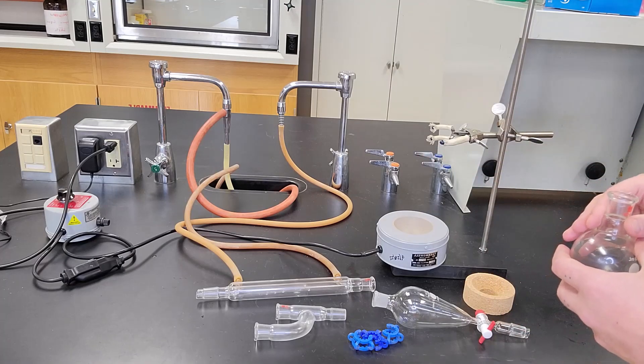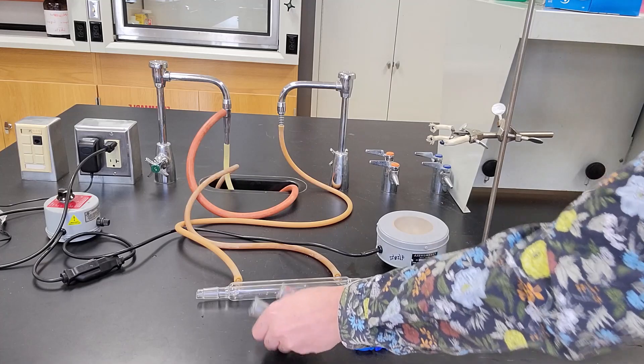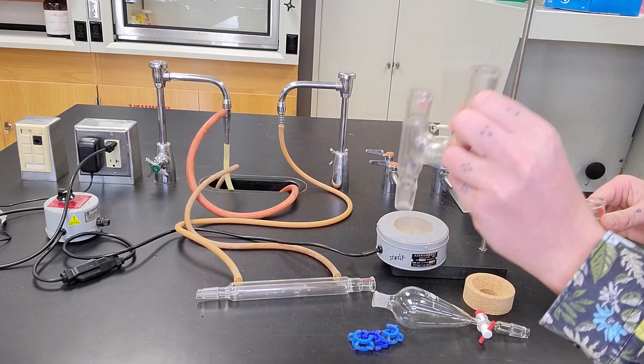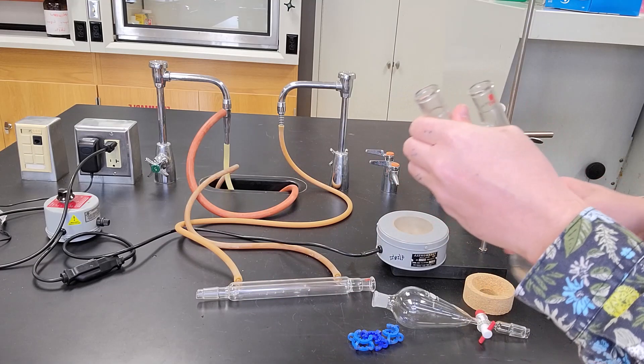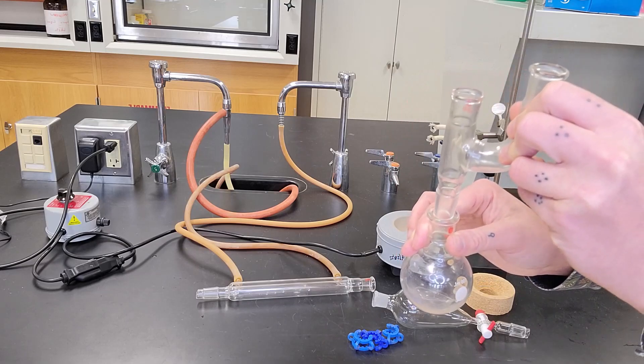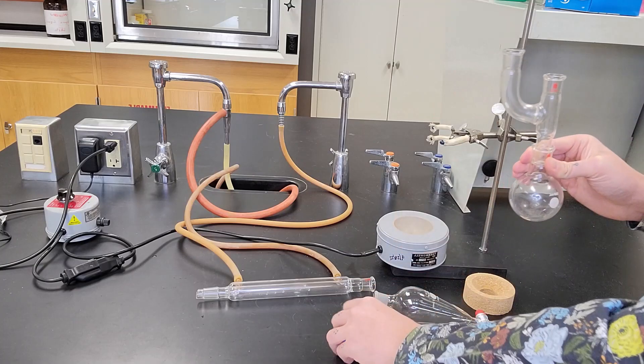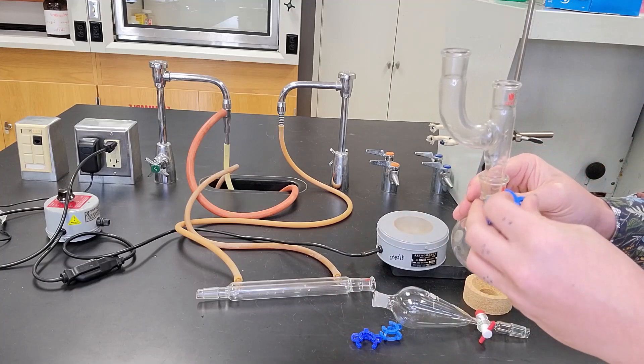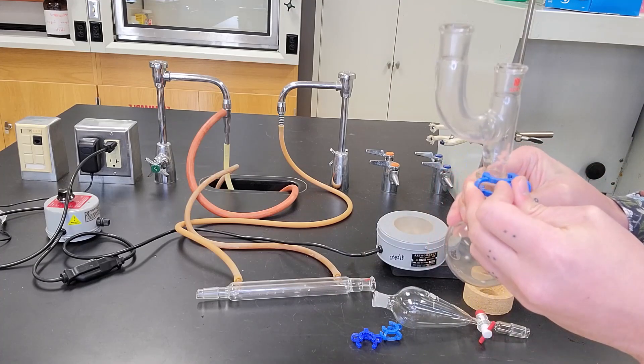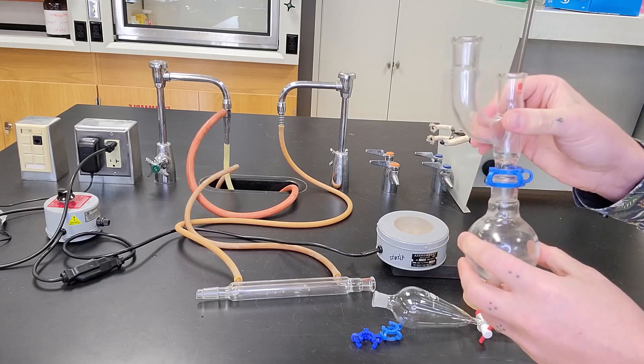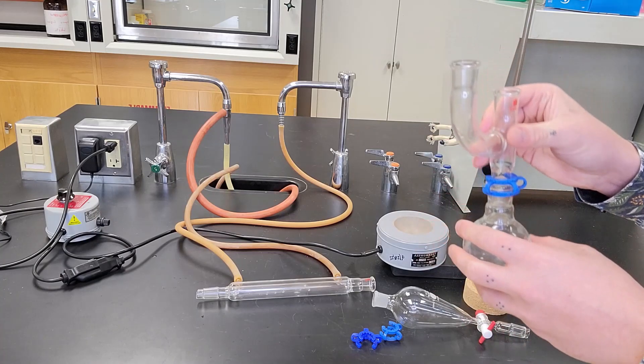So I'm going to take the Claisen adapter. This is the one with three ports. I'm going to take the Claisen adapter and put it in the round bottom flask. And again, I've already pre-greased all of these joints with silicone grease and I'm going to clip it. So I have my Claisen adapter with the round bottom flask at the bottom.